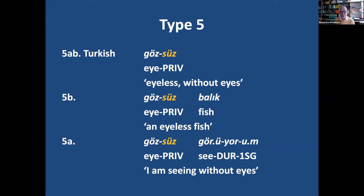The same type we have in Turkish or Turkic languages: there is a caritative or privative suffix, like *-sız/-siz*, 'without'. You can use it both nominally and adverbially — for example, *gözsüz balık*, 'an eyeless fish', or *gözsüz görüyorum*, 'I'm seeing without eyes' in adverbial use. In Turkish, we would not call this a case suffix but a privative derivational marker, which has both adnominal and adverbial uses.